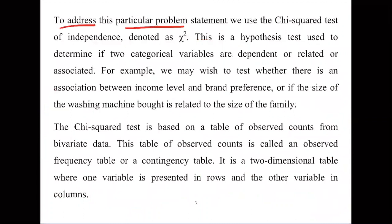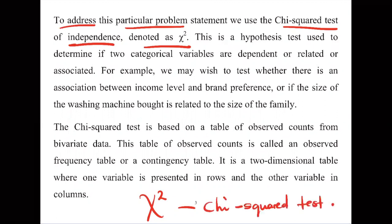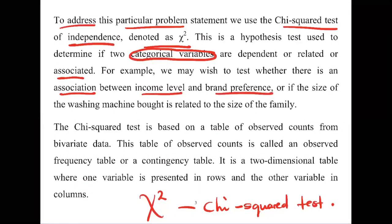To address this kind of problem, we use the chi-square test of independence, denoted χ². This hypothesis test determines if two categorical variables are dependent, related, or associated. For example, we may test whether there is an association between income level and brand preference, or whether washing machine size purchased is related to family size — both variables being in categories.